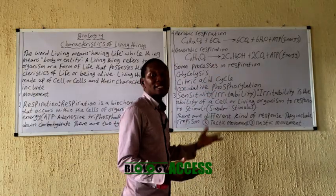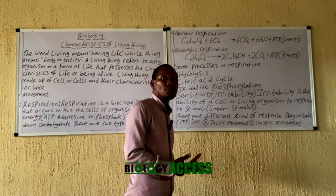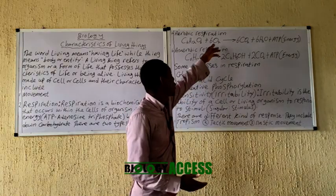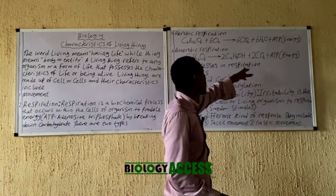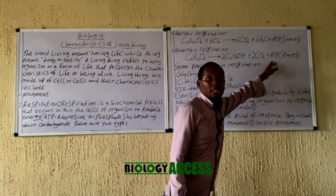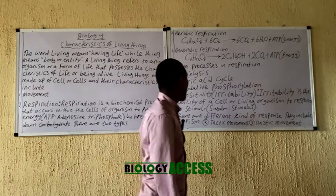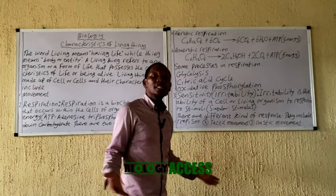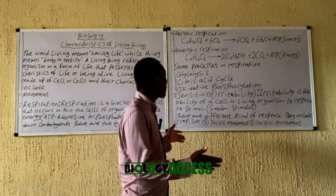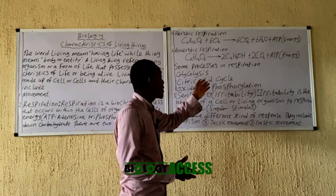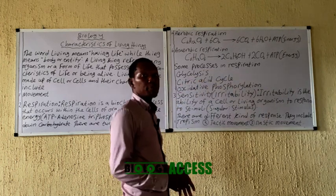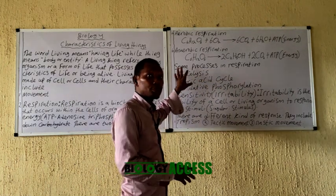In anaerobic respiration, food is broken down to give rise to energy without the use of oxygen. The waste products are alcohol and carbon dioxide, while the essential product is ATP, which is energy. In the respiratory process, there are various processes involved: we have glycolysis, the citric acid cycle, and oxidative phosphorylation. A separate video will be produced covering these processes in detail.